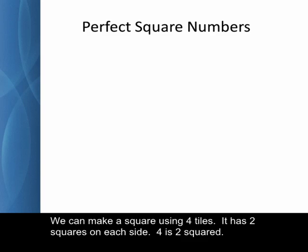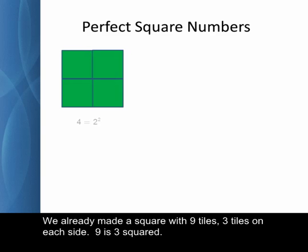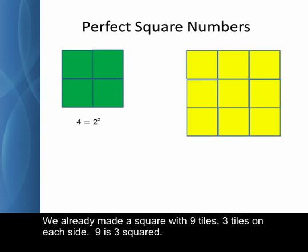We can make a square using 4 tiles. It has 2 squares on each side. 4 is 2 squared. We already made a square with 9 tiles, 3 tiles on each side. 9 is 3 squared.